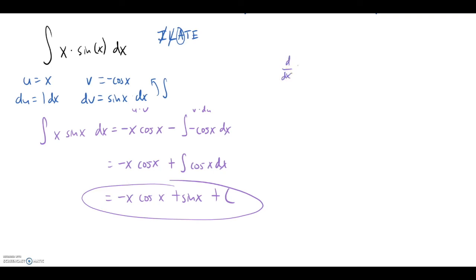I'd like to finish this section of the video by proving to you that this is the antiderivative of the function we started with and we'll do that by differentiating our result. Well, differentiating the first term requires the product rule so we'll get negative x times negative sine of x plus negative 1 times cosine of x, the derivative of sine of x becomes cosine x and the derivative of our constant c becomes 0. The first term simplifies to x times sine of x and notice the next two terms are opposites they cancel each other out and we're left with the function we started with.